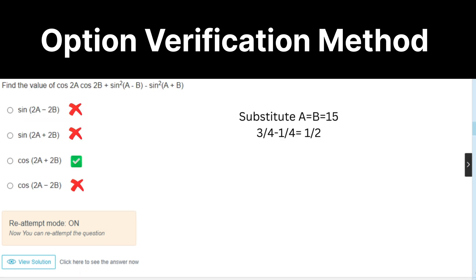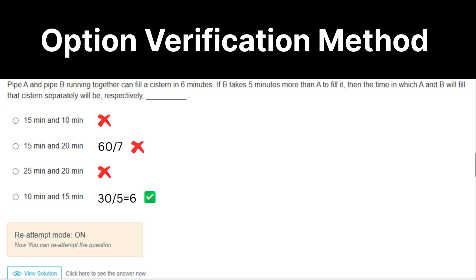Here, substitute A equal to B equal to 15. That's it. Pipe B takes 5 more minutes than A to fill it. Which means you can directly eliminate option A and C. And now we are left with two options, B and D. Here, if work is 60, efficiency will be 7, which means 8 point something will come. It is not 6 minutes. So it will be eliminated. 10 and 15, which means if work is 30, efficiency will be 5. I mean 6 minutes. It is satisfying the condition. That's it.